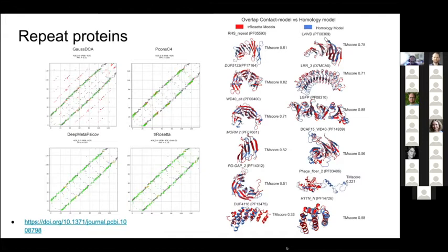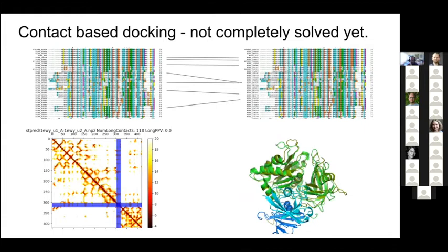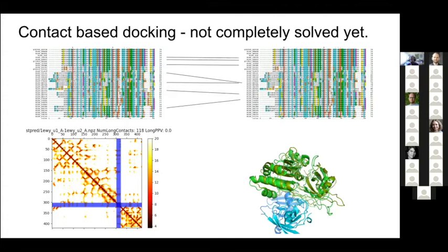This basically shows that for all well-folded single-domain and multi-domain proteins, we can make accurate models directly from sequence. So what to do next? Most proteins do not act by themselves — they act by interacting with other proteins and molecules.